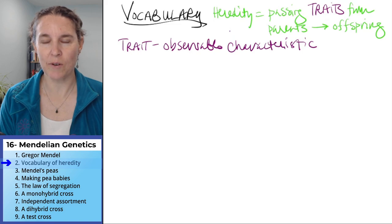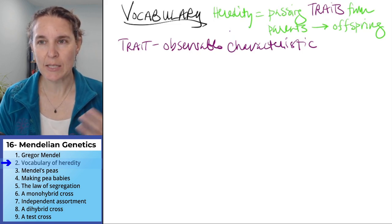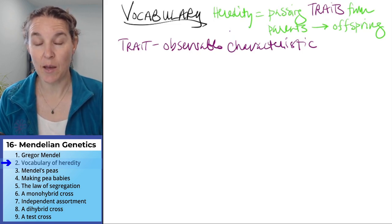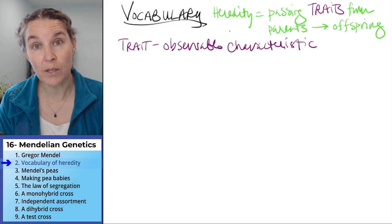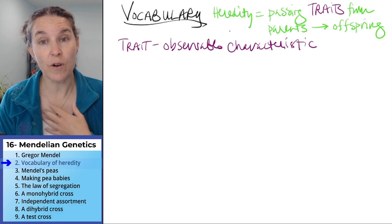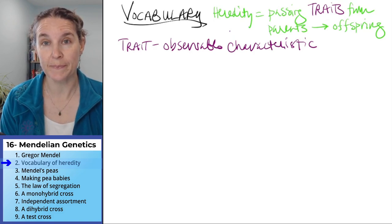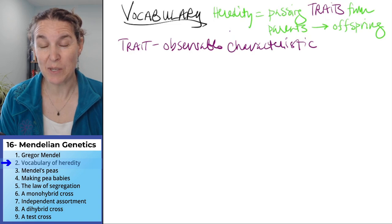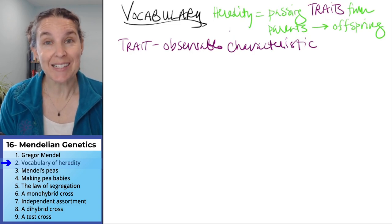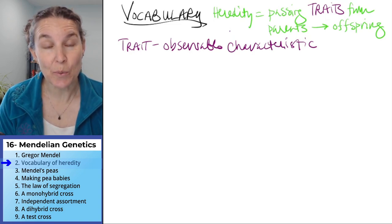Can we get any more vague? Heredity is passing observable characteristics from parent to offspring. It has a lot to do with DNA.